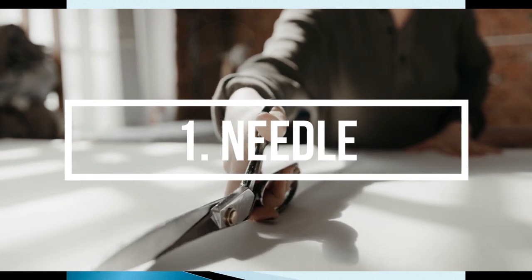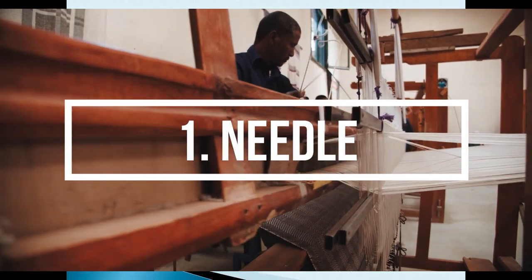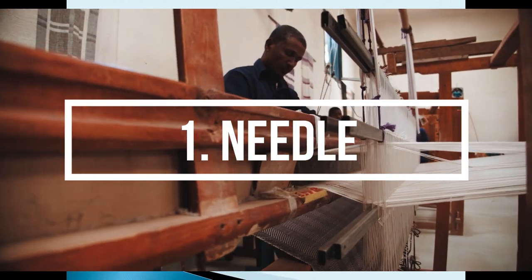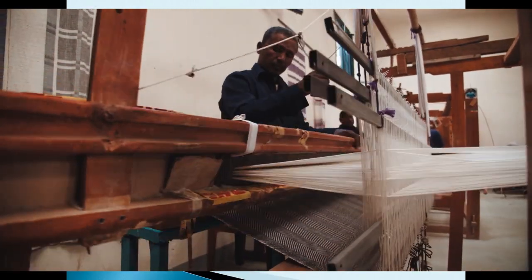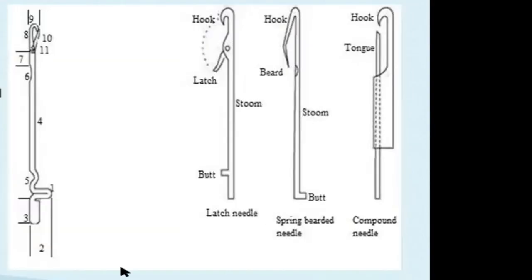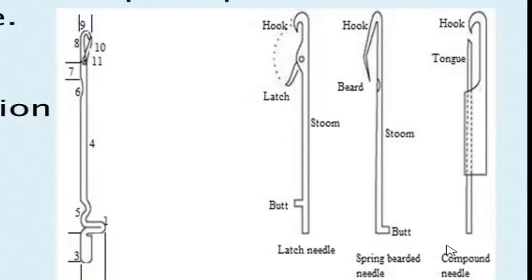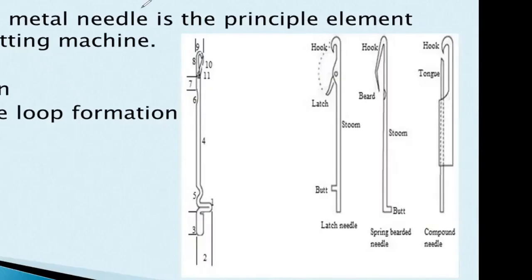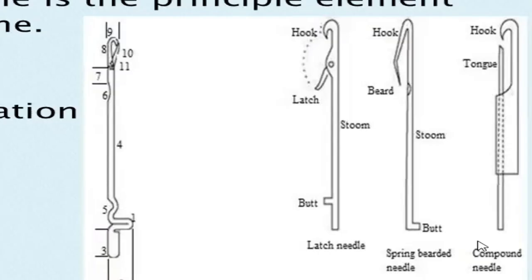The hook element is the needle loop. We can see three different needles: the first one is the latch needle, the second one is the bearded needle, and the third one is the compound needle.